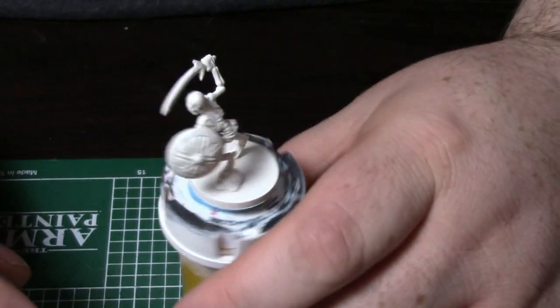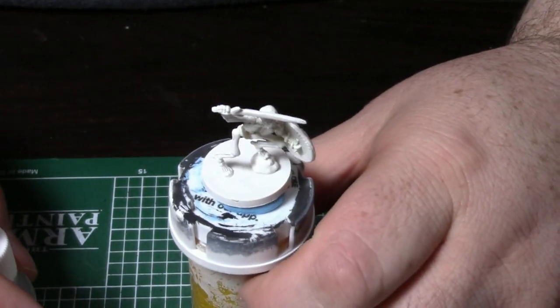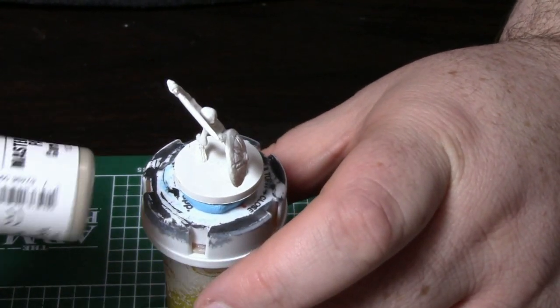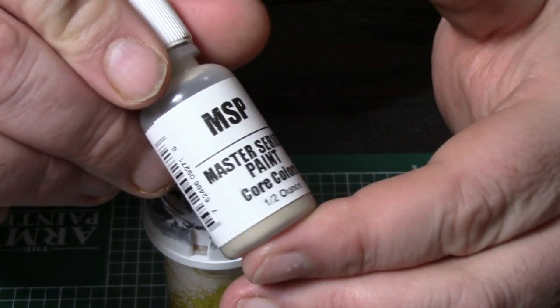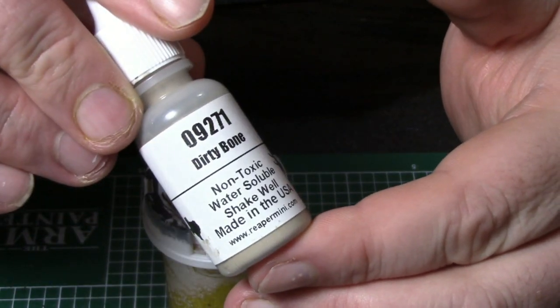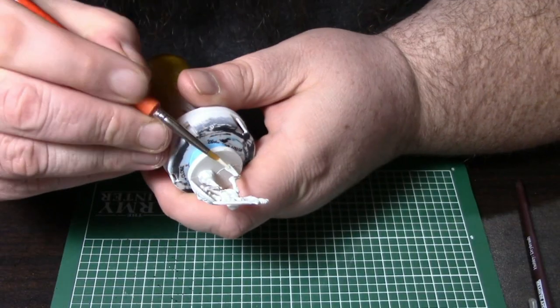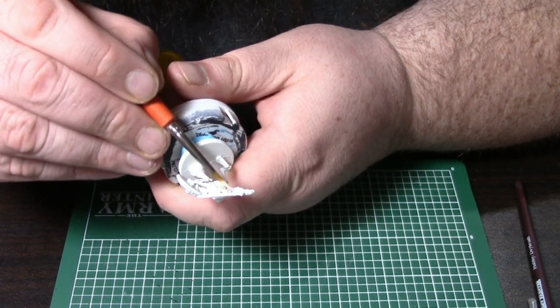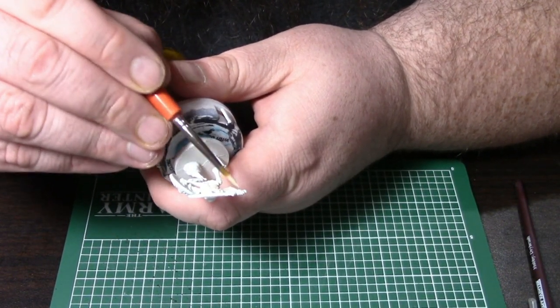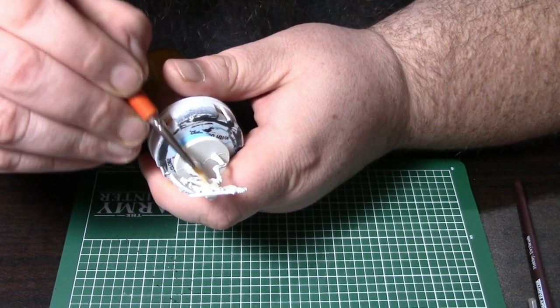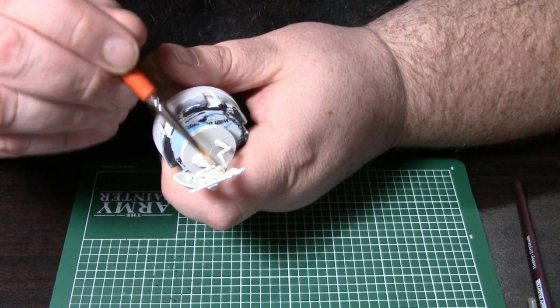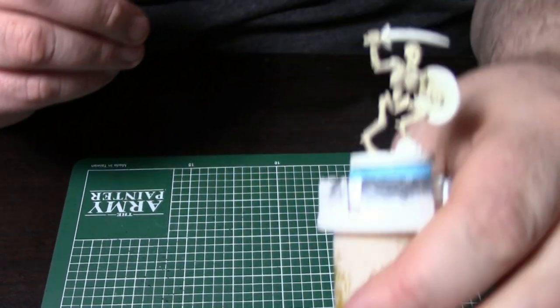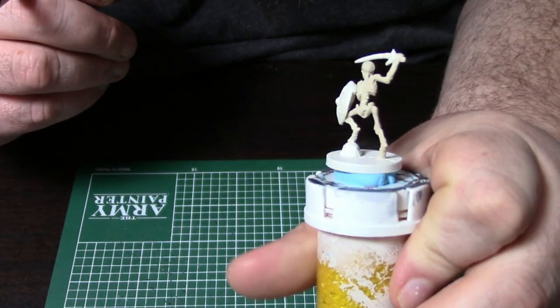I'm going to go ahead and lay down the base color for the bones, and for that I'm going to be using the Reaper Dirty Bone. That's about what you want it to look like.